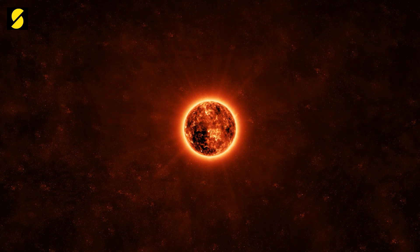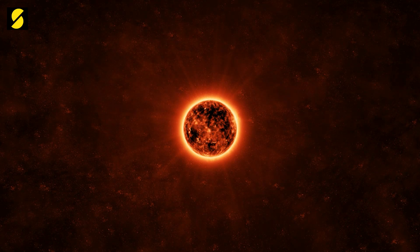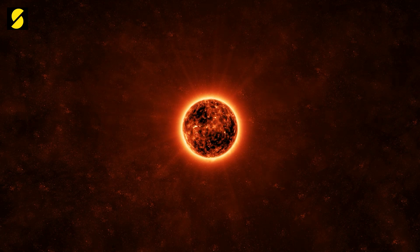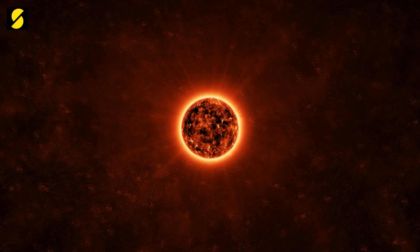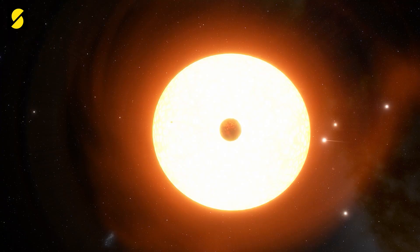This is the Ignis 121, a yellow-white F-type star, hundreds of millions of years old, burning stably, warming the only planet that revolves around it.